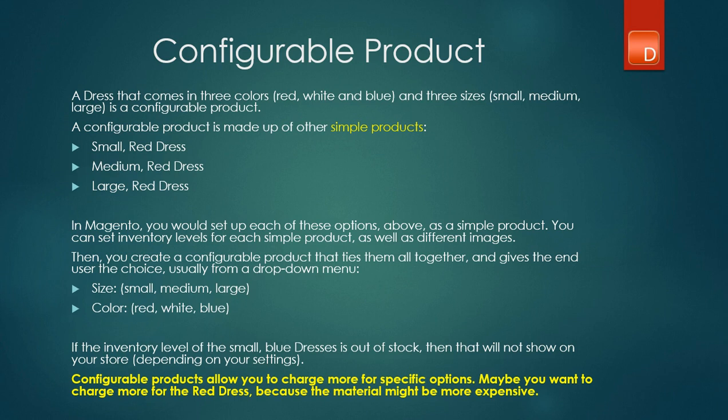One of the biggest advantages of using a configurable product is that you can actually charge extra. For example, if a small red dress option is a little bit more expensive, you can charge people extra. You can also manage your inventory effectively. Those are some of the biggest advantages of using a configurable product.